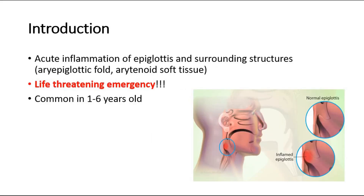Acute epiglottitis is an acute inflammation of the epiglottis and the surrounding structures, such as the aryepiglottic folds or arytenoid soft tissues. It is a life-threatening emergency because there is a high risk of respiratory obstruction. It affects all age groups but is most commonly seen in children around 1 to 6 years old.